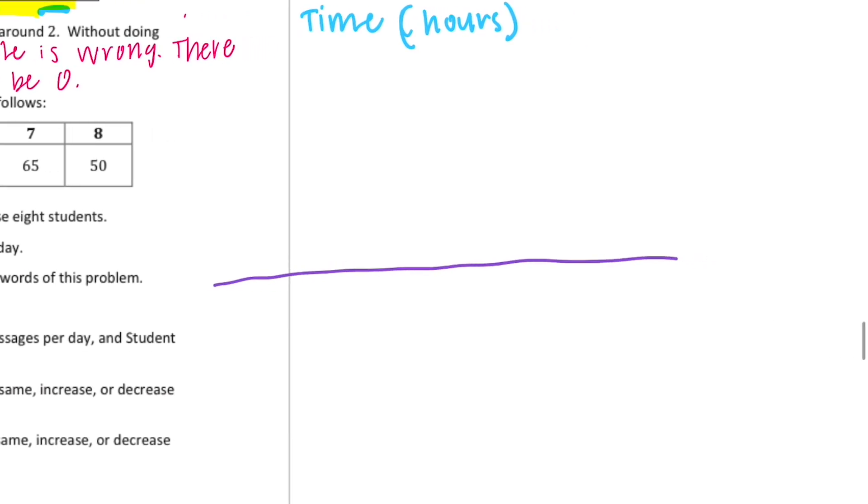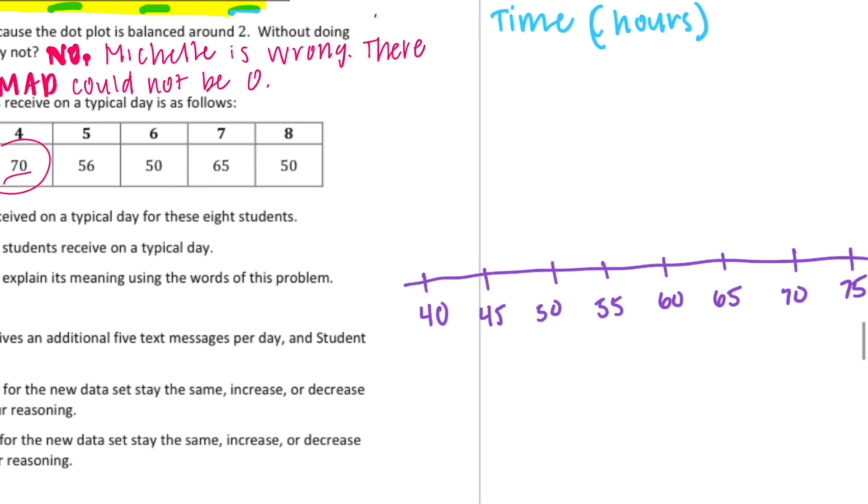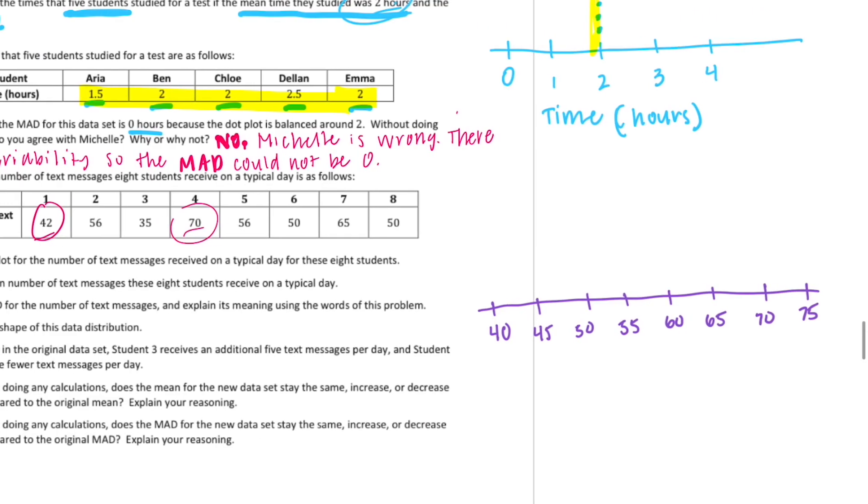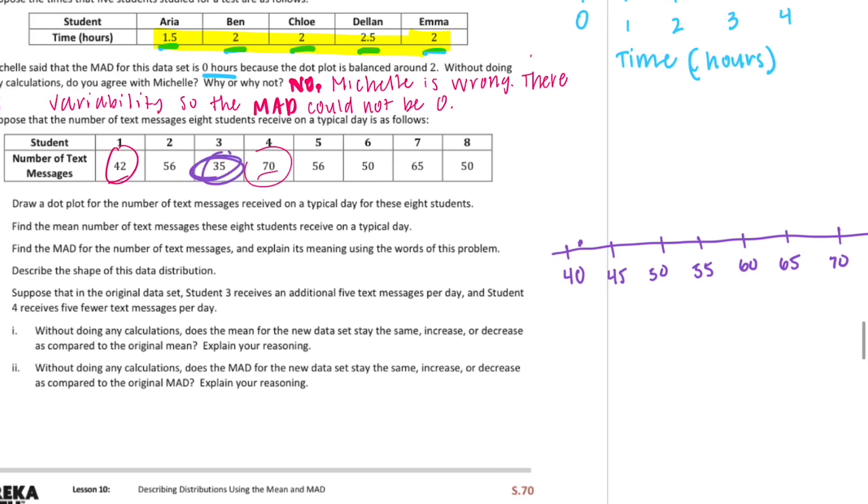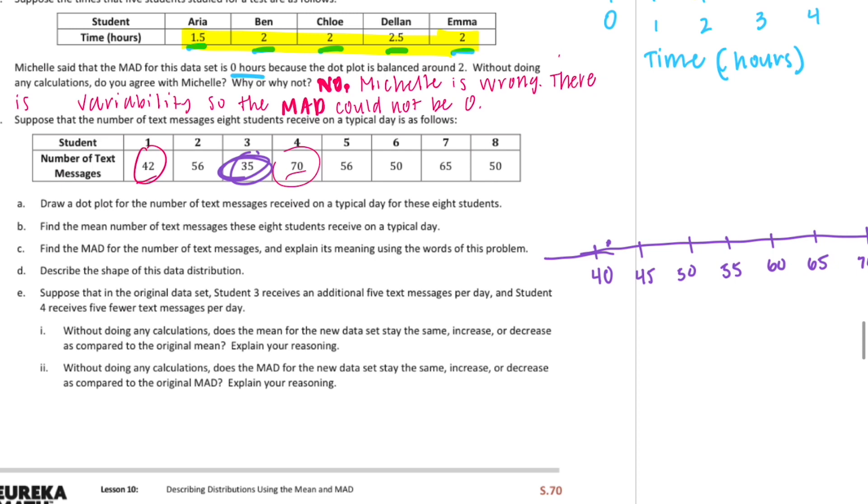And I'll go from 40 and count by fives. 55, 60, 65, 70, 75. All right, so we have a 42, that'll be about right there. Oh, guys, I missed it. Our low is actually 35, that's fine, just make a 35 right there.